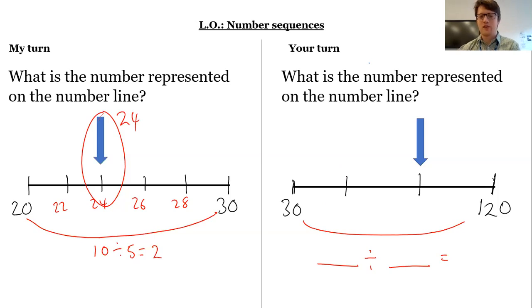So again, slightly trickier one this time. To get from 30 to 120, I need to add 90. 120 subtract 30 is 90. I've got 1, 2, 3 equal parts here. 90 divided by 3, well, 9 divided by 3 is 3. So 90 divided by 3 will be 30. So each time I'm adding 30. So I've got 30, 60, 90, 120. So this blue arrow is worth 90, represents the number 90.